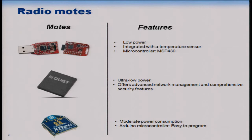The first is from Texas Instruments, which we call the TI mode. It has very low power, is integrated with a temperature sensor, and includes an MSP430 microcontroller for programming. Another mode is the Dust mode, which is ultra-low power and offers very advanced network management and comprehensive security features. The last one is the XB mode, which consumes a little more power but is extremely easy to program.